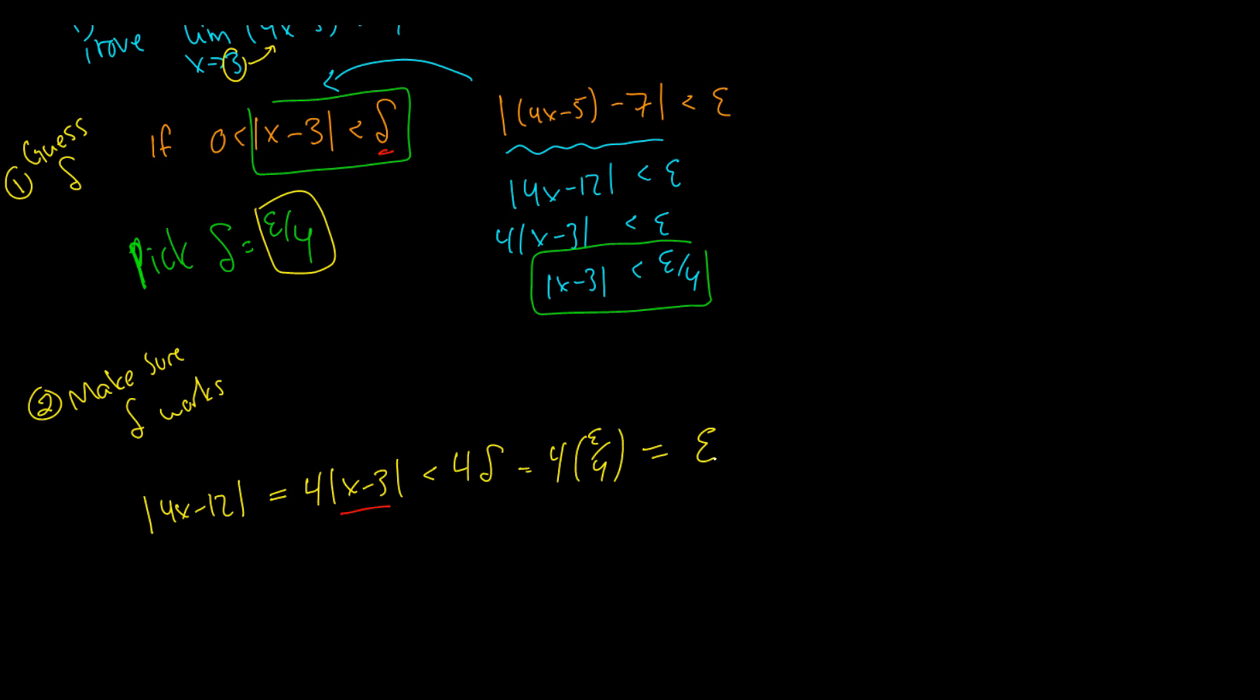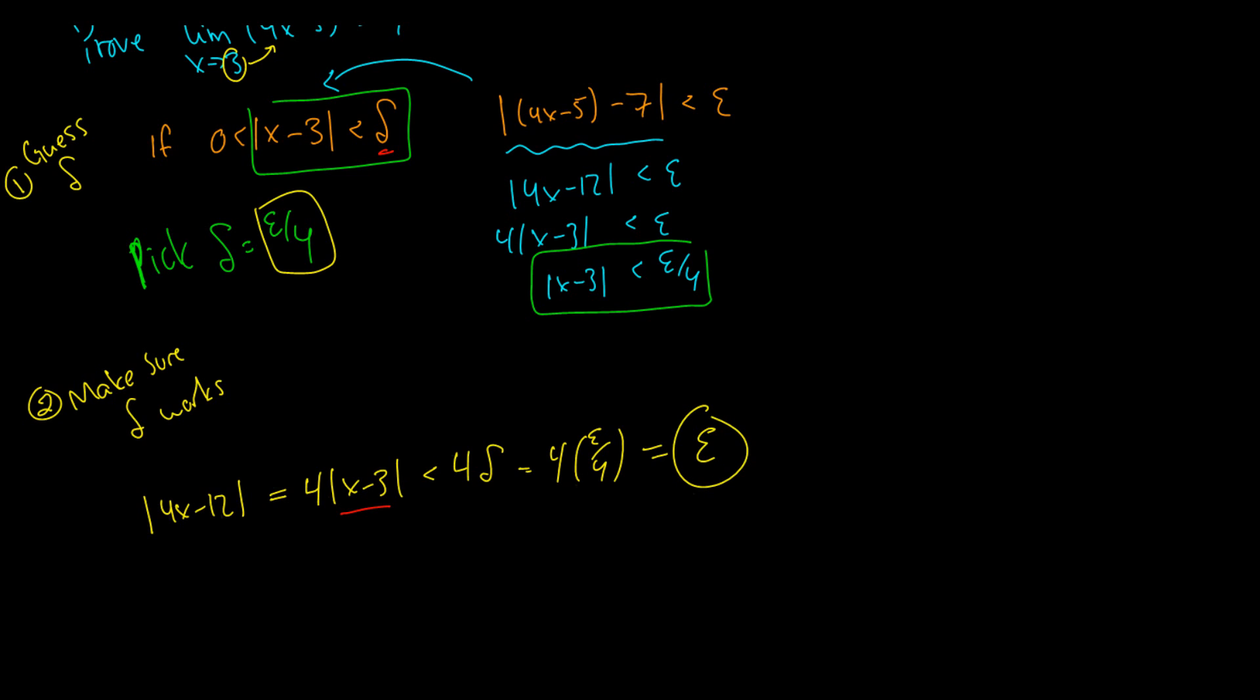So we know it worked, because by picking delta equals epsilon over 4, we got epsilon out of it.